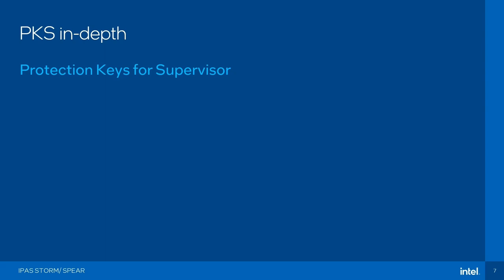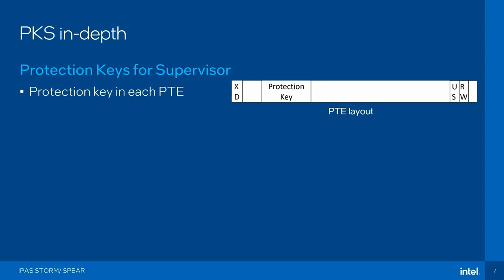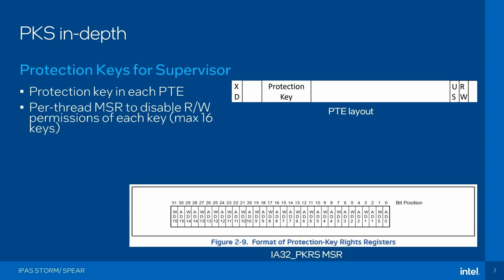Let's delve into this hardware feature PKS and give an overview of how it works. You have these domains of protection keys. For each page table entry in your page table layout, you insert the protection key using some bits that have previously been reserved — those bits now contain a protection key. Normally in a page table entry you have bits for execute-disable, read, write, user, supervisor, and then the physical address. We use a few of those bits to define the protection domain of a certain page. It's four bits in the page table entry that defines to which domain a certain page belongs. Then you can override the permissions defined in the page table entry through an MSR — you can say access-disable for a certain protection key, or write-disable. Four bits gives us a maximum of 16 keys, and then we have an MSR with 32 bits because you have write-disable and access-disable for every single domain.